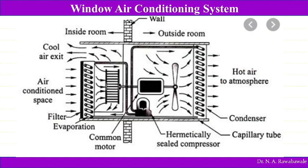Now for unitary air conditioning systems — a separate refrigeration system is provided for each unit. The window air conditioner is one type of unitary system. It has two parts: one outdoor part outside the room and one indoor part inside the room, separated by the wall. Half of the air conditioner is kept outside and half inside. The components visible here are the condenser, capillary tube, and the evaporator.